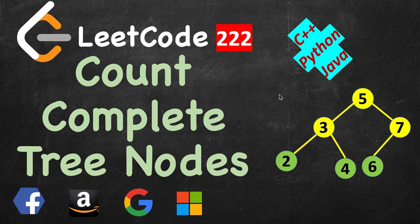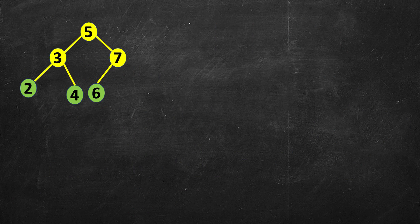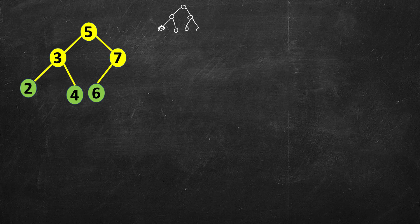In this problem we have to count the number of nodes in a complete binary tree. First, understand what a complete binary tree is. A binary tree, as the name says, will have at max two children. A complete binary tree means that all the nodes have two children except the nodes at the second last level, which can have one child.